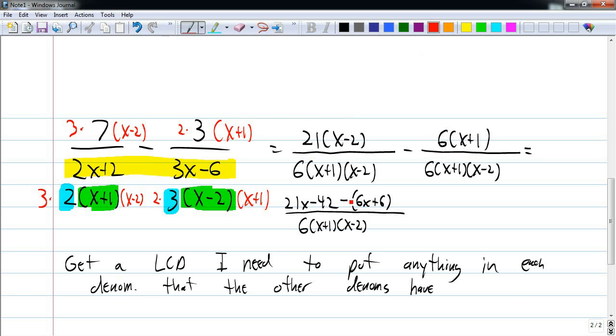I'm subtracting, so I flip signs and add. And so, I have now 21 minus 6 is 15. 15x minus 48 over 6 times x plus 1 times x minus 2.